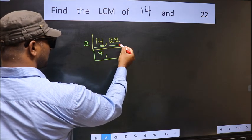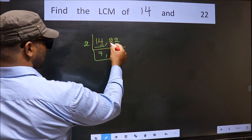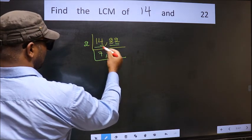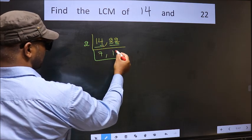Now, the other number 22, last digit 2. So, this is divisible by 2. First number 2, when do we get 2 in 2 table? 2 1s, 2. The other number 2, when do we get 2 in 2 table? 2 1s, 2.